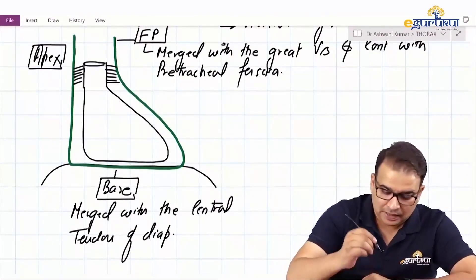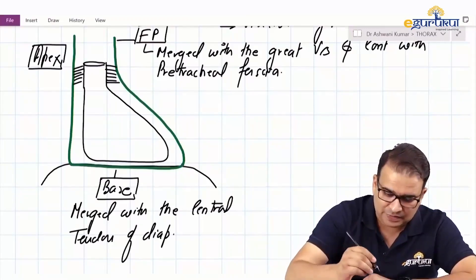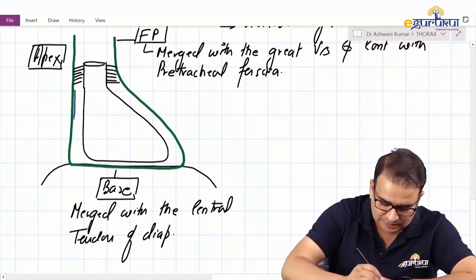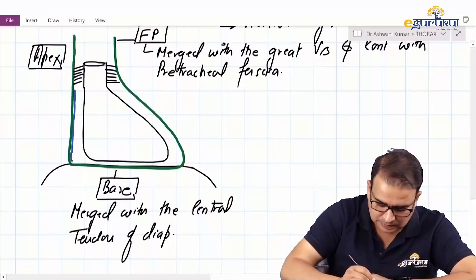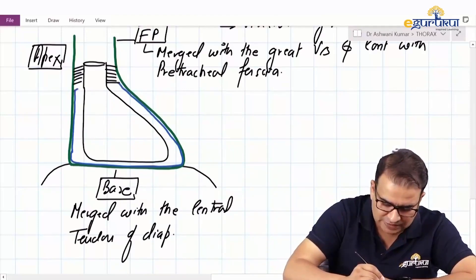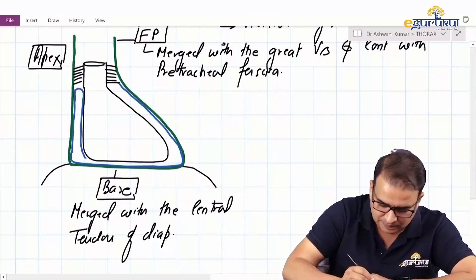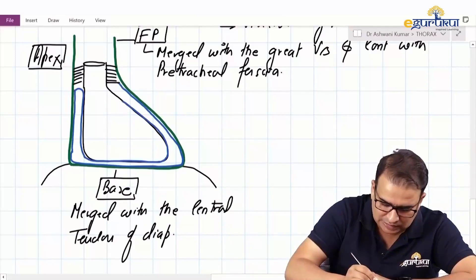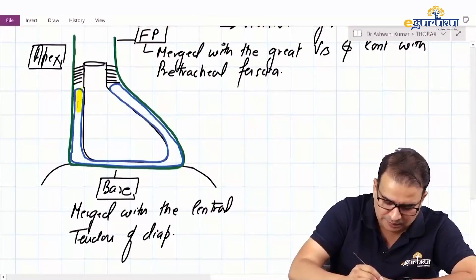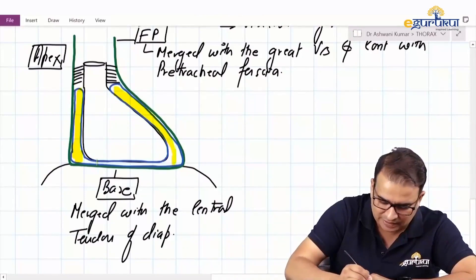When it comes to the serous pericardium, we have two layers. One is the parietal layer, which is adherent to the fibrous pericardium, and then we have a visceral layer which is adherent to the heart, covering the heart and its coronary vessels closely. The space in between is the pericardial sinus — a thin film of fluid present inside which acts as a lubricant.